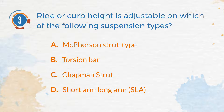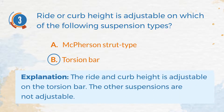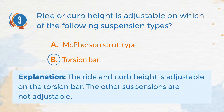The correct answer is B. Torsion bar. Explanation: The ride and curb height is adjustable on the torsion bar. The other suspensions are not adjustable.